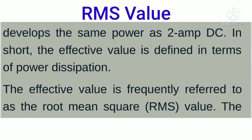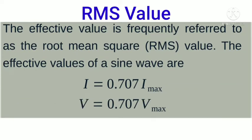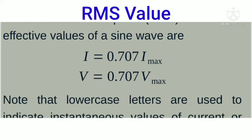How do we define this in terms of power dissipation? This value is equal to 0.707 times Imax for current, and V equals 0.707 times Vmax for voltage.